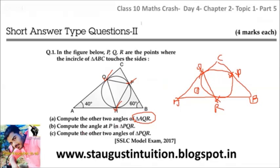Compute the angle at P in triangle PQR. This is PQR — this is P. Compute the other two angles of triangle PQR. This is the second question.